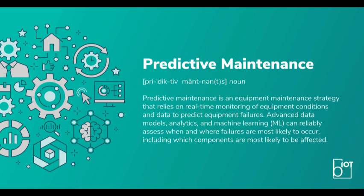Predictive maintenance is a technique to monitor the performance of a structure or a piece of equipment during operation. It is the method of data collection over time to monitor the state of equipment to detect anomalies or possible defects in equipment, so these defects can be fixed before the failure occurs. The primary objective of predictive maintenance is to find patterns that can help predict and ultimately reduce the failures of machines.